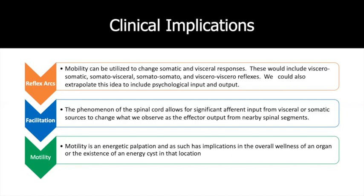That idea we can use to treat patients. Organs respond to two things: they respond to abnormal proprioception and they respond to self-death. We can use abnormal proprioception to try and override an abnormal somatic response. We can also use mobility to get a visceral-visceral response, which I'll go into more in coming slides.